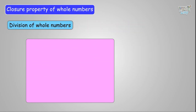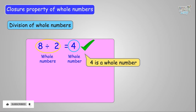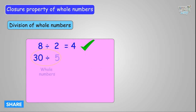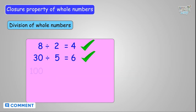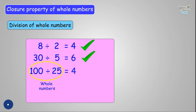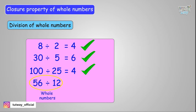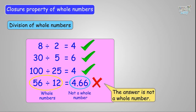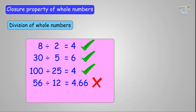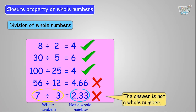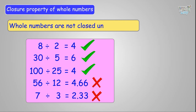Now let's learn about division. 8 divided by 2 is 4 — a whole number. 30 divided by 5 is 6 — a whole number. 100 divided by 25 is 4 — a whole number. But 56 divided by 12 is 4.66, which is not a whole number. And 7 divided by 3 is 2.33 — also not a whole number. So we can say that whole numbers are not closed under division.